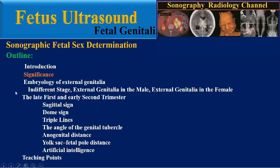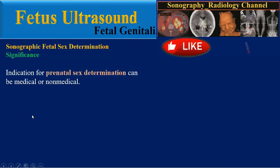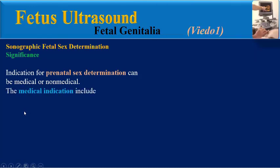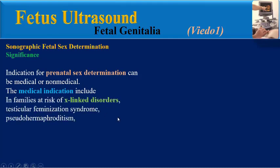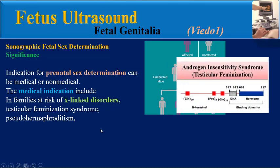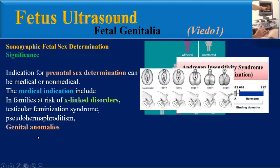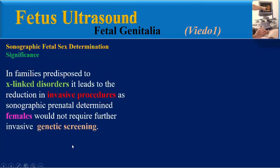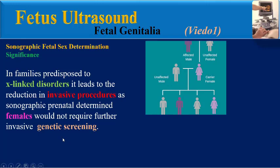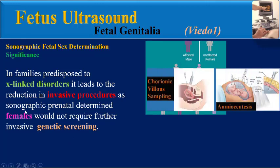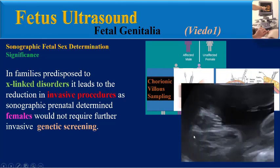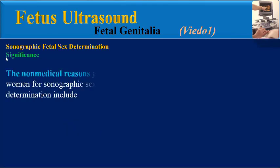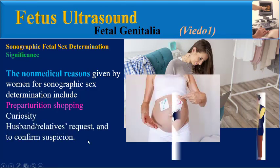The significance of fetal sex determination: Indications for prenatal sex determination can be medical or non-medical. Medical indications include families at risk of X-linked disorders, testicular feminization syndrome, pseudo-hermaphroditism, genital anomalies, ambiguous genitalia, and determination of zygosity in multiple pregnancy. In families predisposed to X-linked disorders, it leads to reduction in invasive procedures, as sonographically determined female fetuses would not require further invasive genetic screening. Non-medical reasons include periparturition shopping, curiosity, husband's or relative's request, and confirmed suspicion.